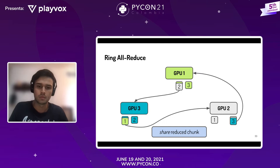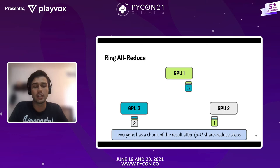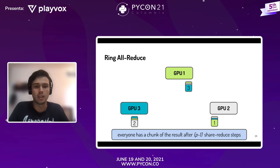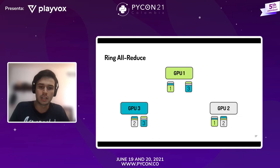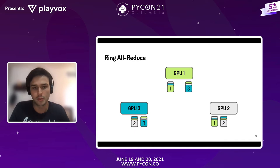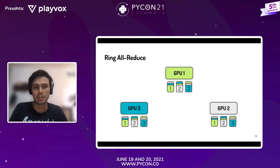Se sigue haciendo el mismo proceso de compartir en anillo. Esto llega hasta un punto en que cada GPU tiene una porción de los gradientes ya reducida, después de P menos 1 pasos, donde P es el número de GPUs. Luego lo único que falta es compartir esa porción de gradientes que tiene cada una con las demás, haciendo el mismo proceso de anillo. Con 3 GPUs son dos pasos, y luego de esos dos pasos ya todas las GPUs tienen los mismos gradientes y se pueden actualizar las redes, manteniéndolas sincronizadas.